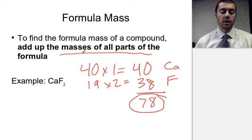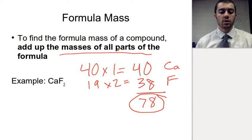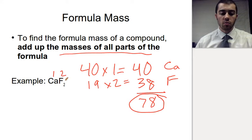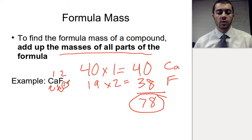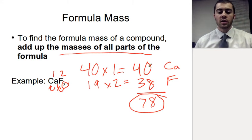To get the formula mass, what we do is add up all the parts of the formula — add up the masses of all the parts. We have one part calcium and two parts fluorine. With these subscripts — there's an imaginary one for calcium — that's telling us how many of each element we have. So we have two fluorines and one calcium. We add up all the parts, and that gives us the total mass.